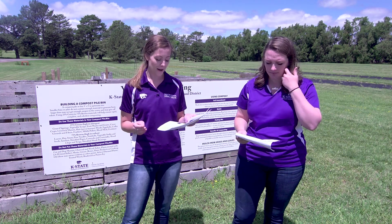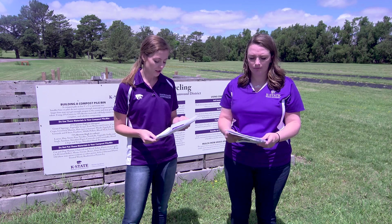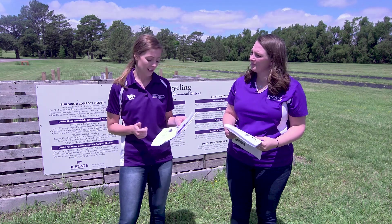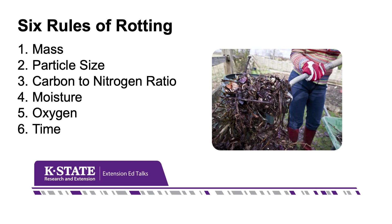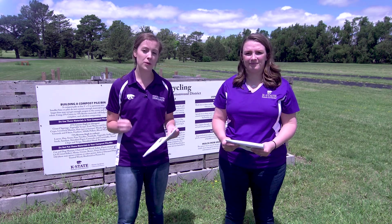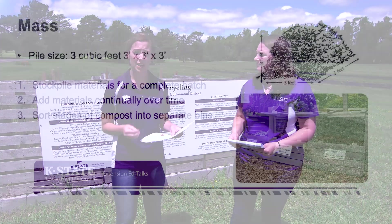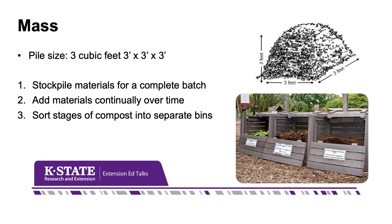Now let's talk about the six rules of rotting — what's happening in the pile and how it breaks down. The first is mass, meaning the size of the pile. You want about a three cubic foot pile because that's the perfect size to heat up well. If it's any smaller it won't heat up, and if it's any larger it's too hard to maintain.